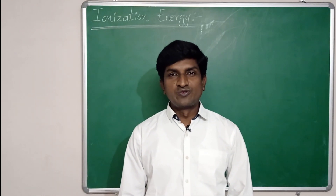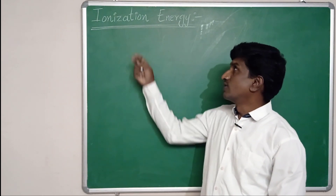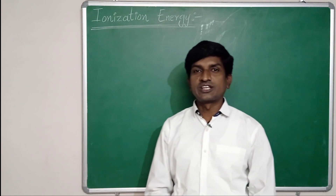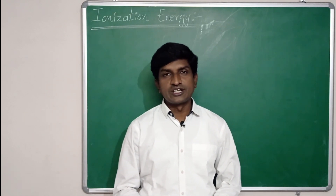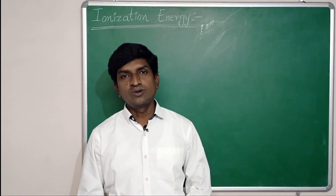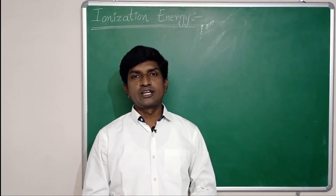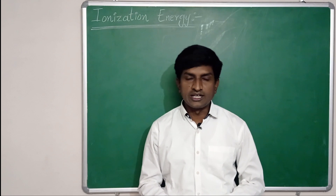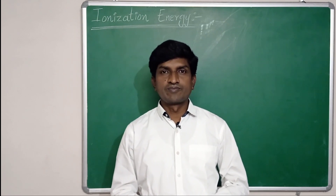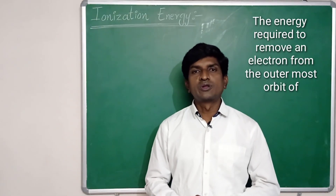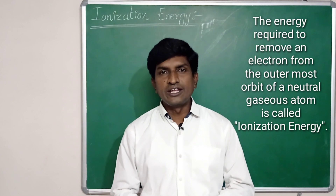Hello everybody, welcome to Physics Learning Point. In this video we are going to learn about ionization energy, the factors affecting ionization energy, and also the variation of ionization energy in groups and periods of the modern periodic table. The energy required to remove one electron from the outermost orbit of a neutral atom in its gaseous state is called ionization energy.